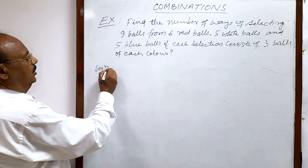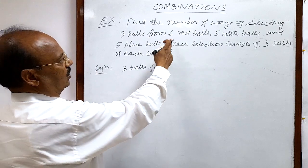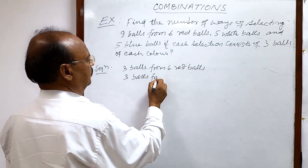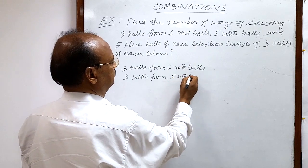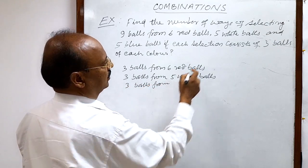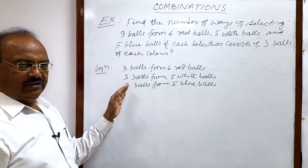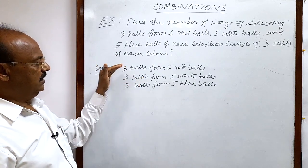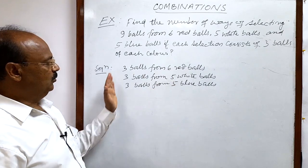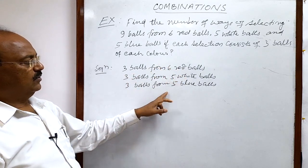What does this condition mean? It means we have to make a selection like this: 3 balls from 6 red balls, 3 balls from 5 white balls, and 3 balls from 5 blue balls. So we have to make a selection like this — altogether there will be a selection of 9 balls out of these 16 balls, with 3 from each color group.